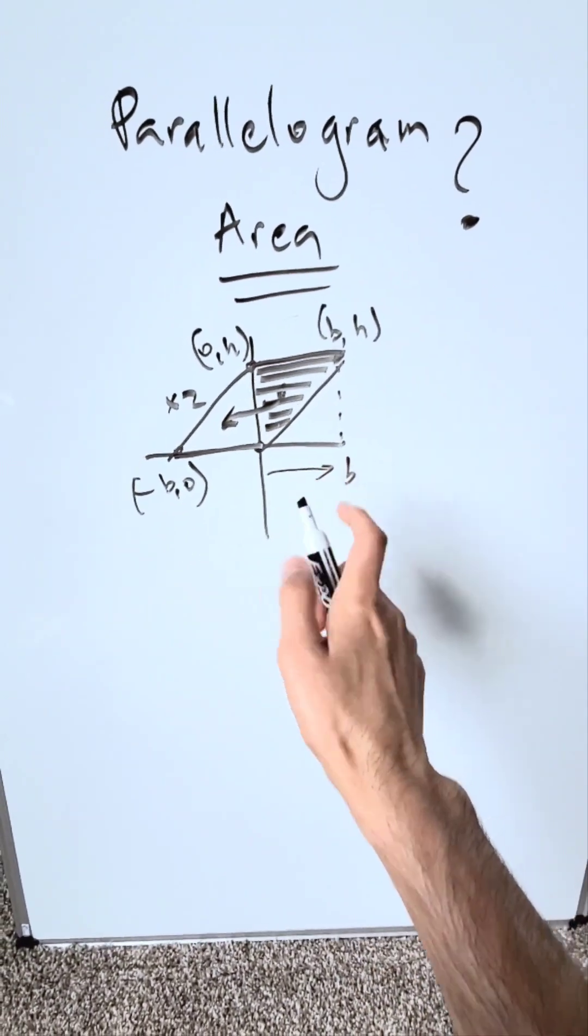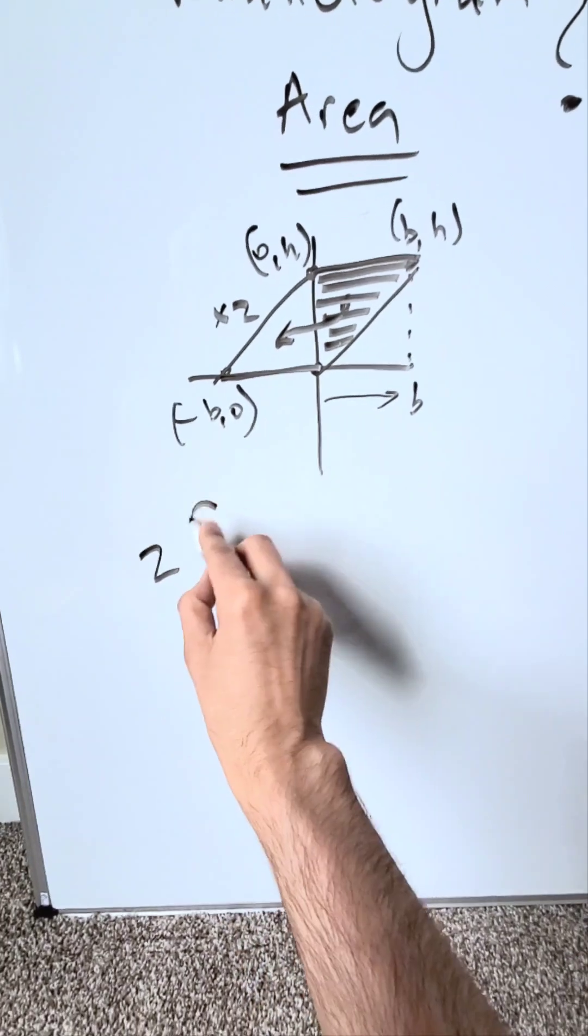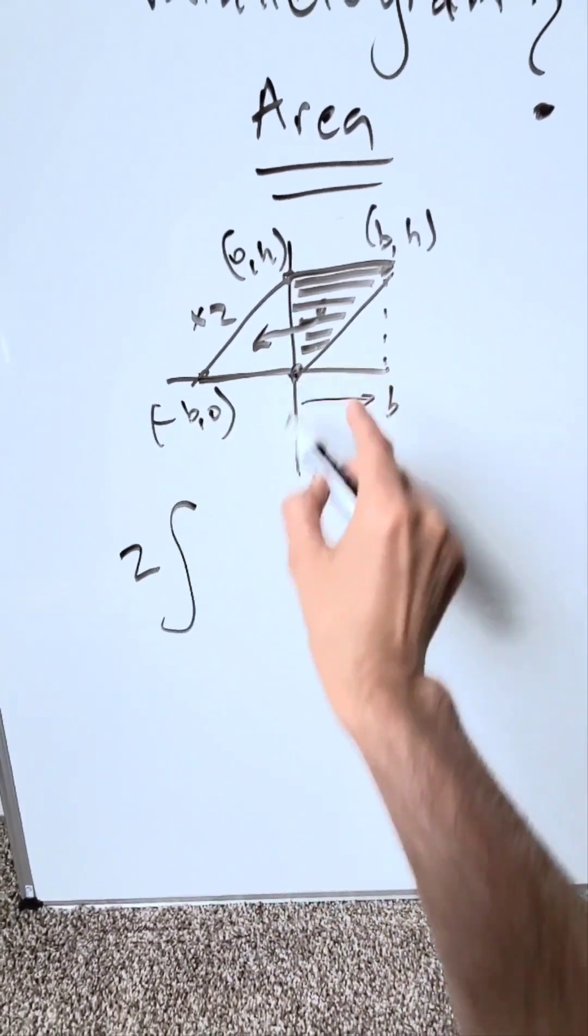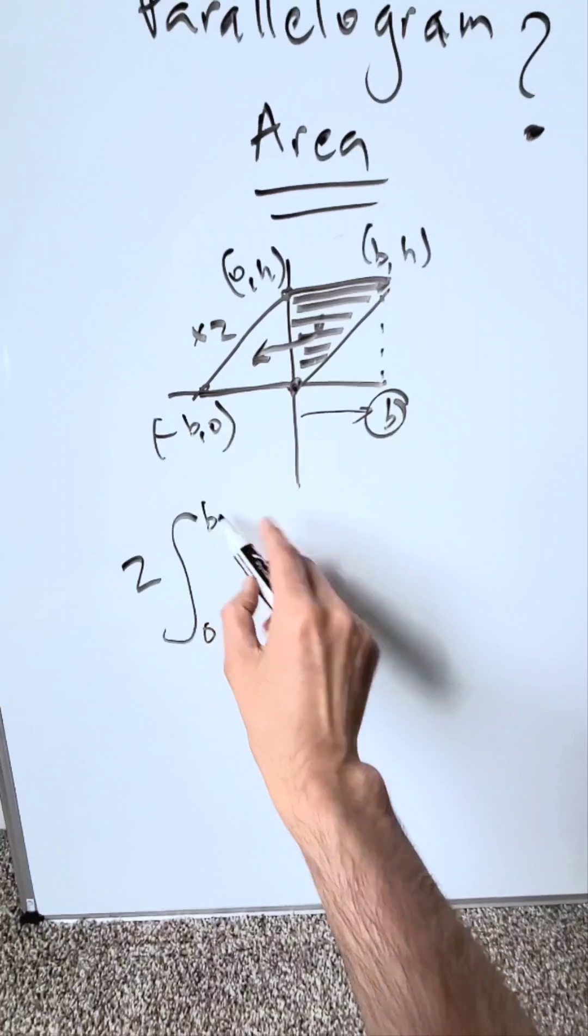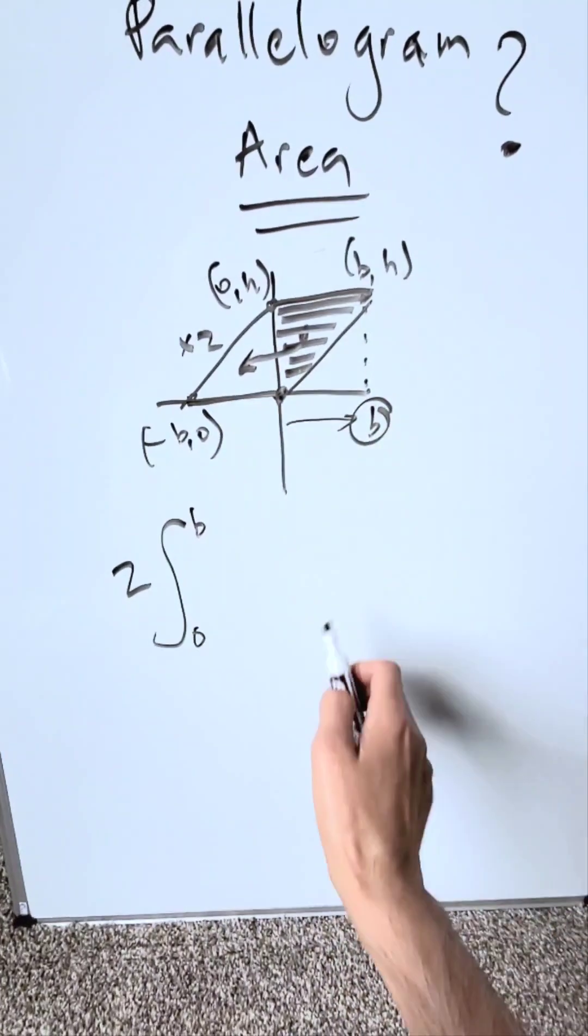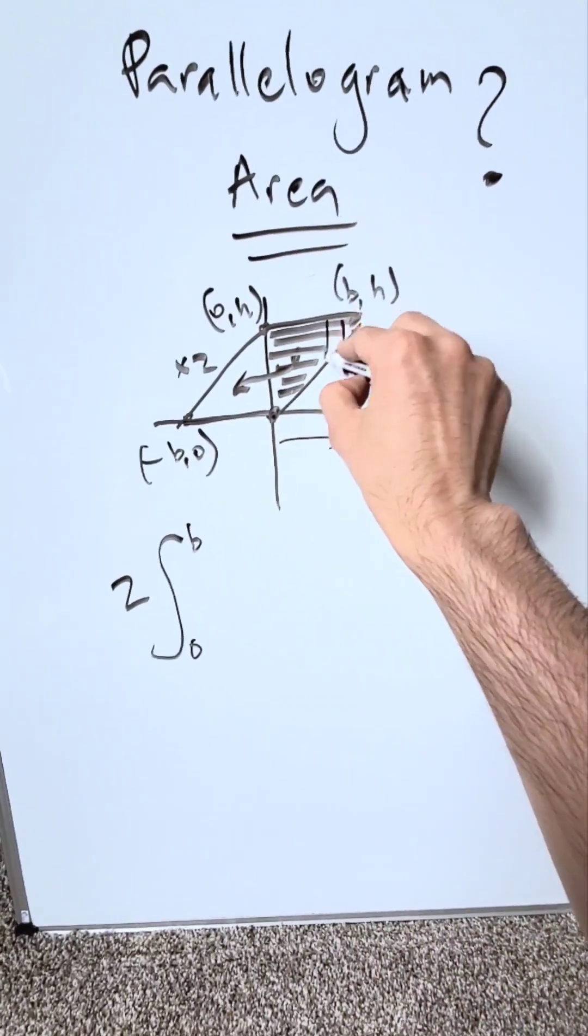How will I create my integral? I have a 2 sitting outside. Lower limit is the origin, 0. Upper limit is b. Everything here along the x-axis from 0 to b. I'm focusing only on this shaded triangle.